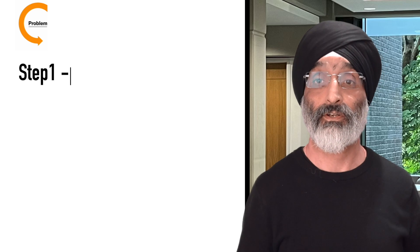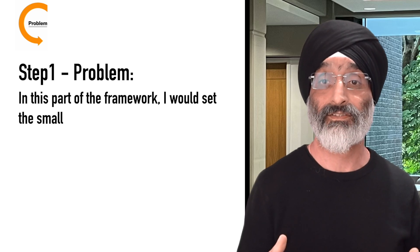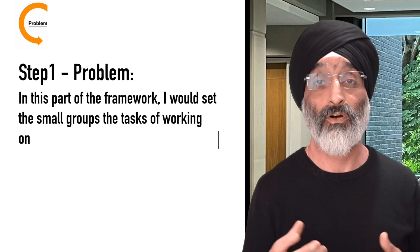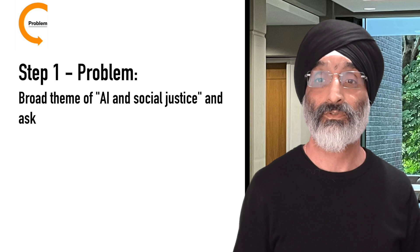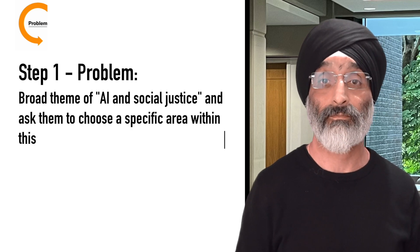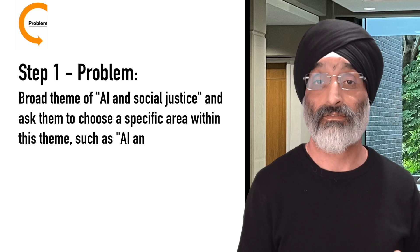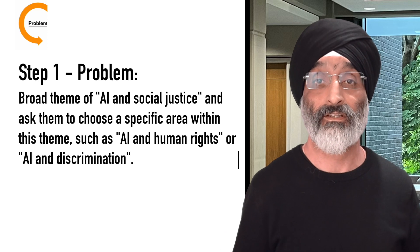In the Problem section of the framework, I'd set the small groups the task of working on the assignment. I'd provide the students with the broad theme of AI and social justice and ask them to choose a specific area within this theme, such as AI and human rights or AI and discrimination.